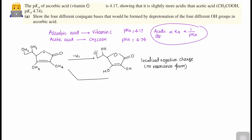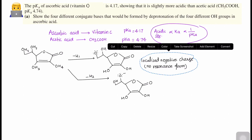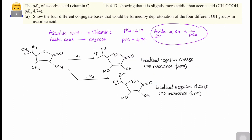Now we will remove the second hydrogen, H2, and draw the structure of its conjugate base. Compared to the first conjugate base, the change is that OH1 remains as it is, and this position now becomes O negative. In this molecule also, if we see, is this negative charge delocalized? There is no conjugation and no resonance, so this is again a localized negative charge with no resonance forms. These conjugate bases are not very stable because the negative charge is not delocalized.